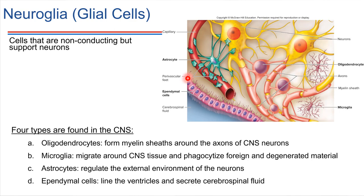Finally in this picture, we have the ependymal cells. These are cells that produce and secrete the cerebrospinal fluid — the type of fluid that exists in the spaces, the ventricles in the brain. Cerebrospinal fluid also descends down the very center of the spinal cord. So those are four different types of supporting cells in the central nervous system.